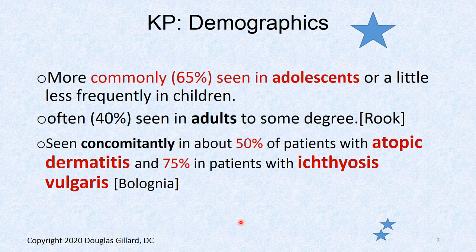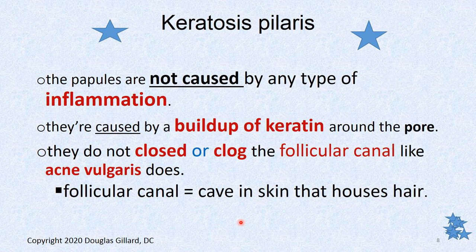What about the demographics? More common in adolescents — about 65% of adolescents have this. Less frequently seen in children, but adults get this too — about 40% of adults get this to some degree. It is seen with some other skin conditions. We talked about atopic dermatitis last time; it's seen concomitantly in about 50% of patients with atopic dermatitis, meaning they have KP lesions in addition to their atopic dermatitis lesions.